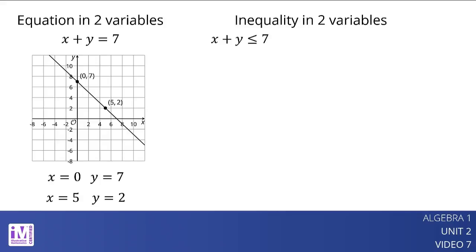The inequality x plus y is less than or equal to 7 is an inequality in two variables. Its solution is any pair of x and y whose sum is 7 or less than 7. This means it includes all the pairs that are solutions to x plus y equals 7, but also many other pairs that add up to a value less than 7. Two possible solutions are x equals negative 6 and y equals 0, and x equals 4 and y equals negative 7.